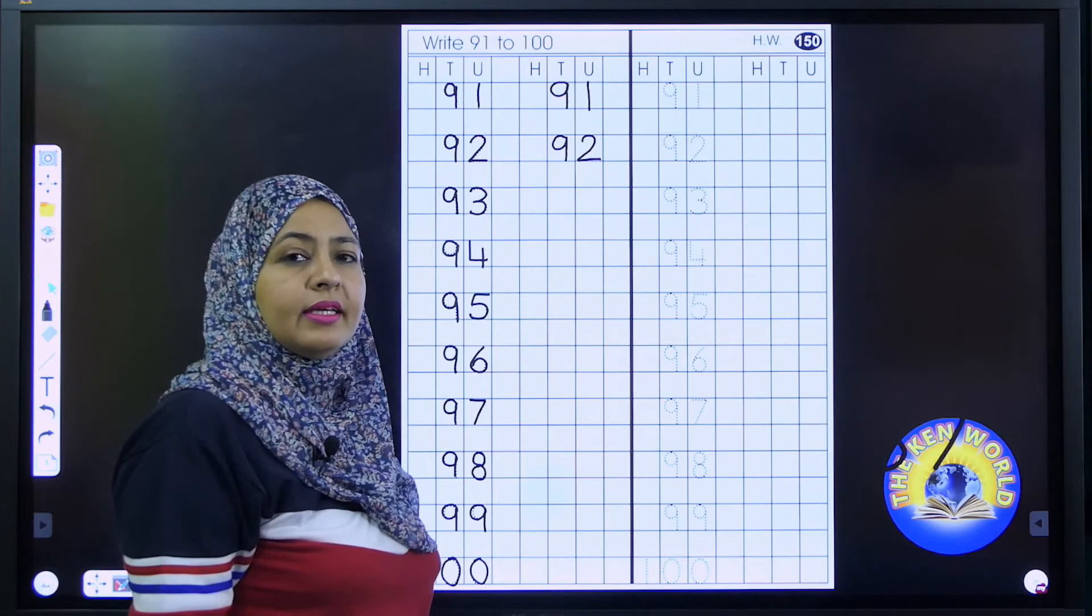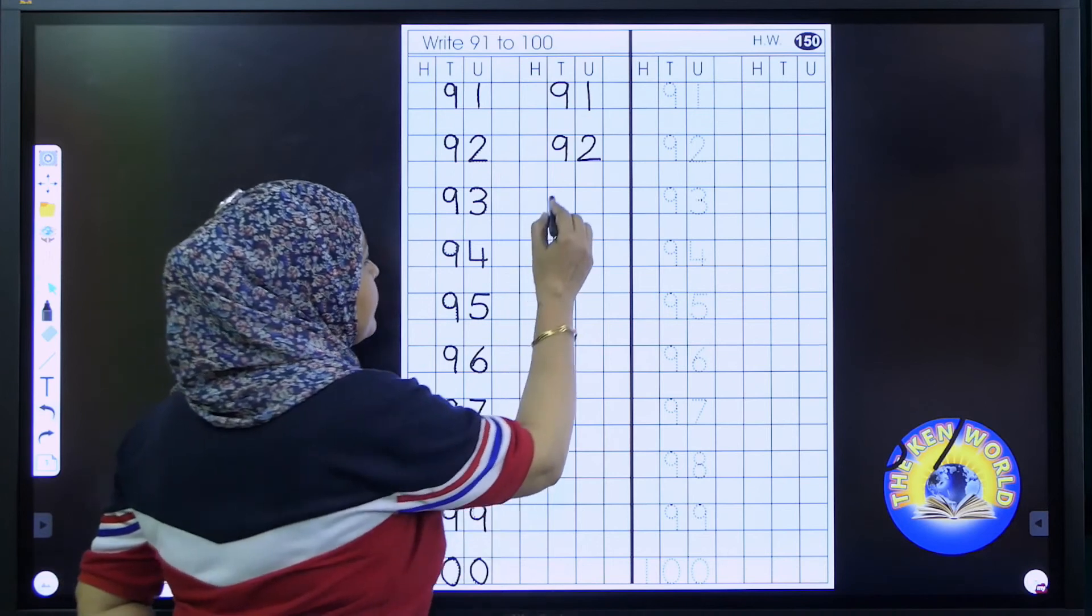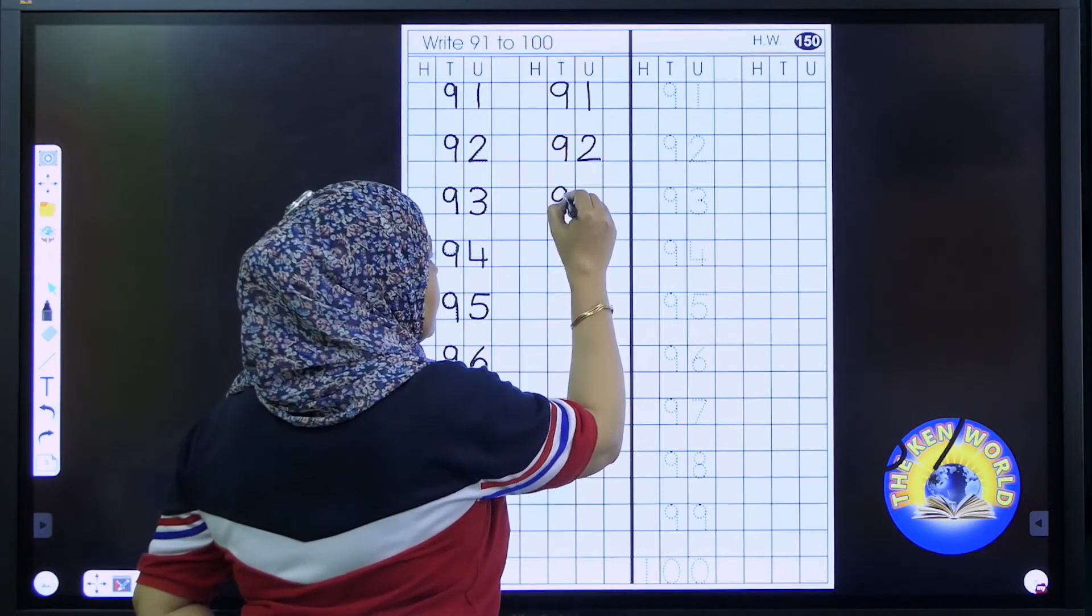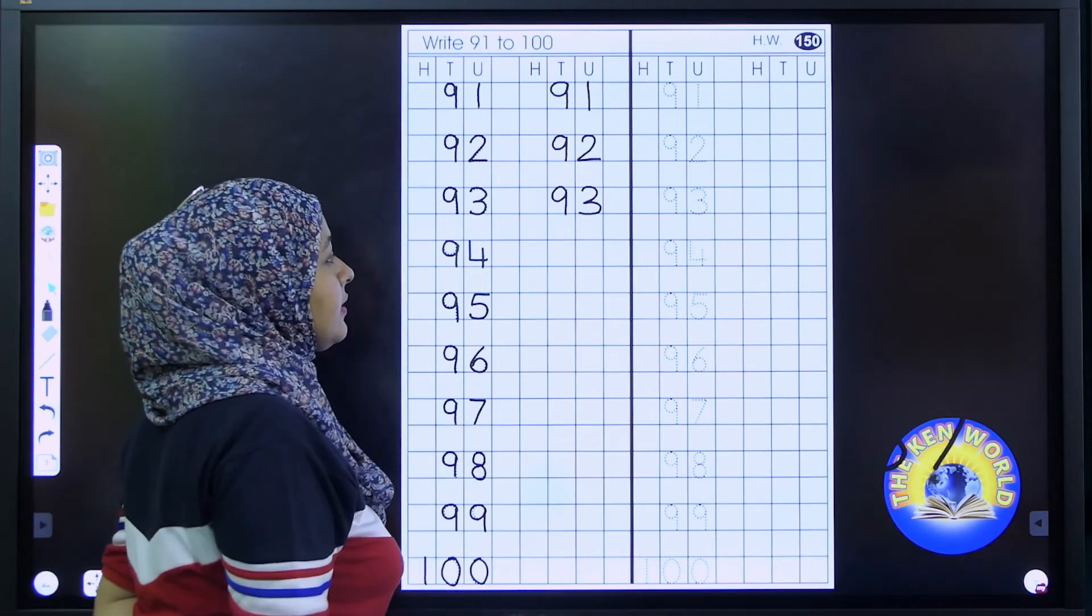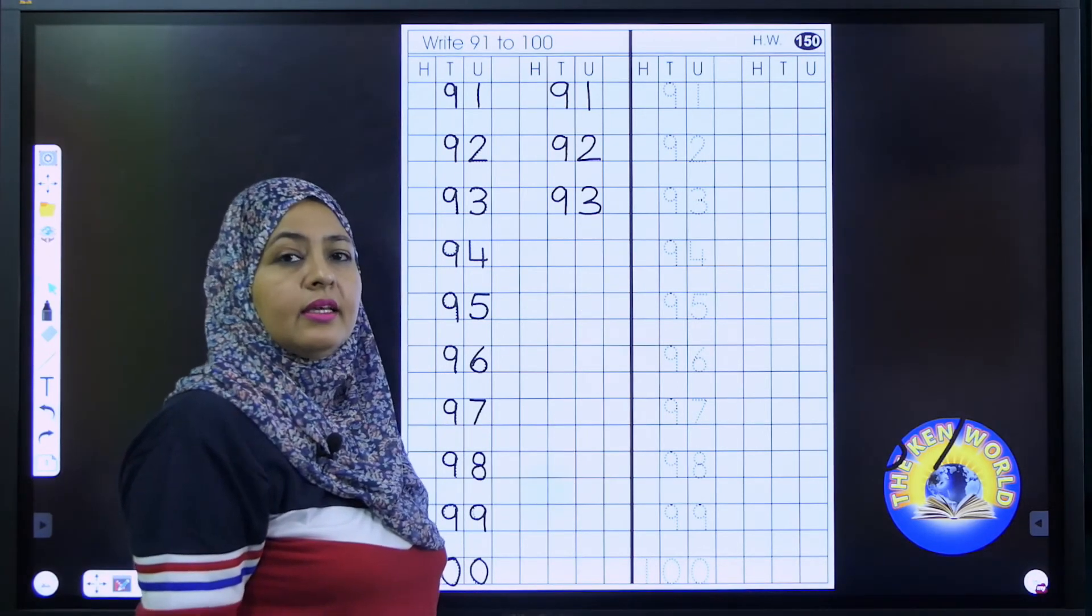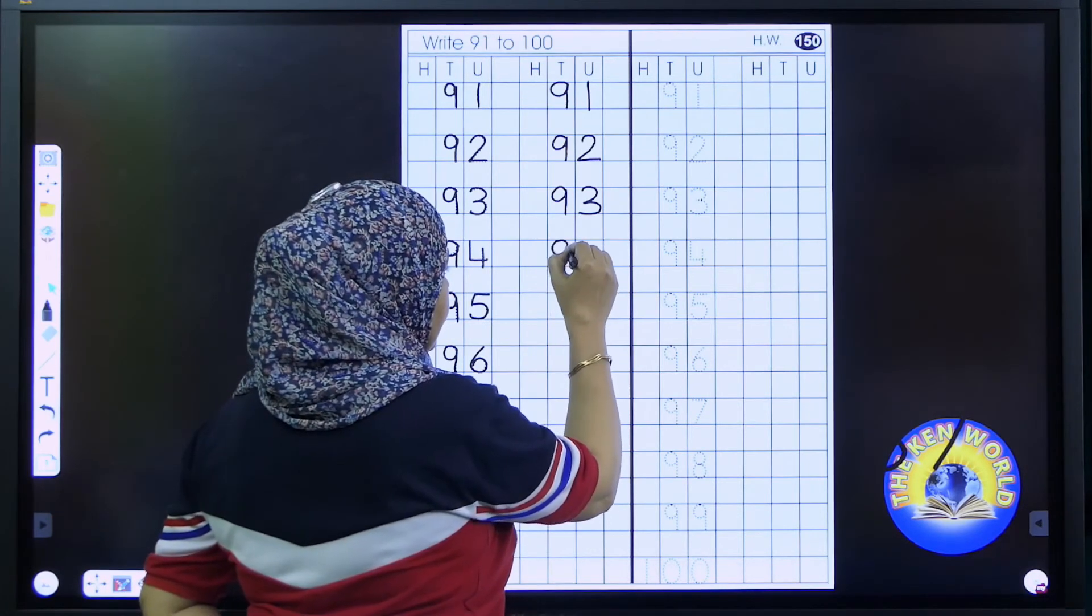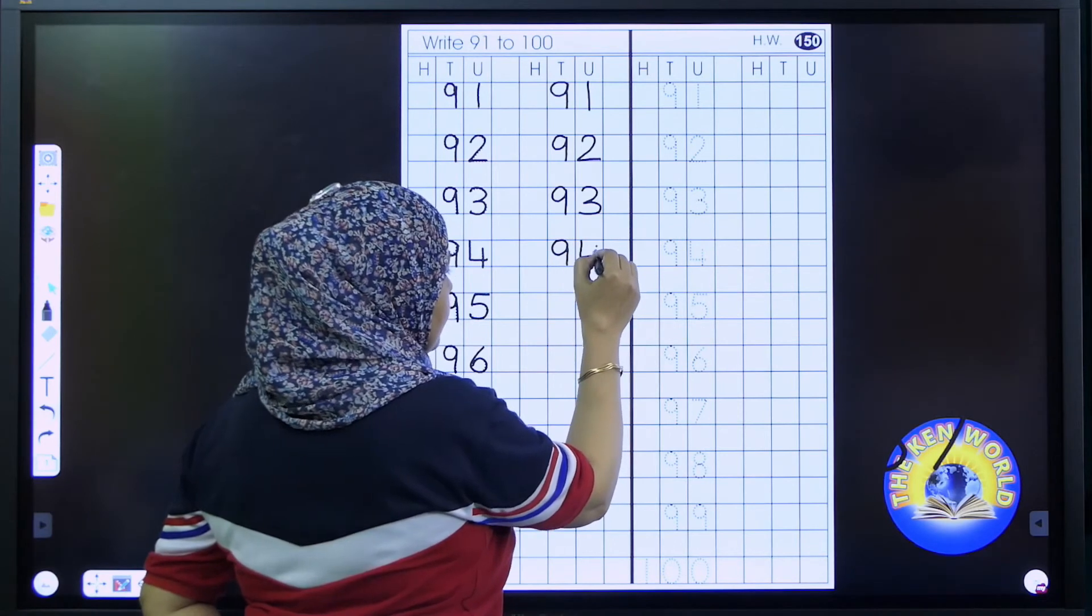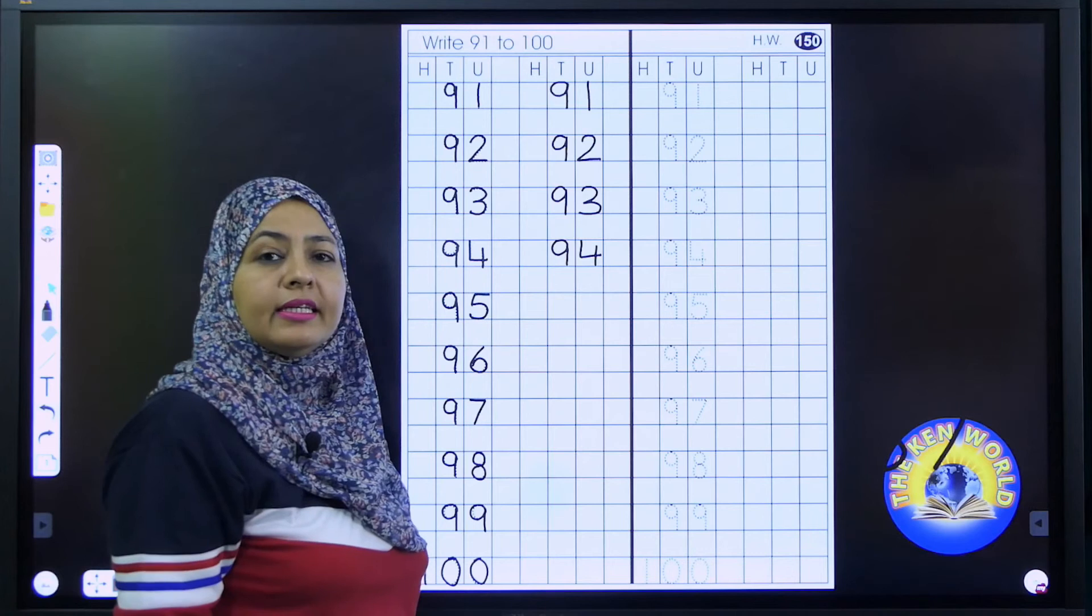The next number is, very nice. 93. 93. 93. What comes after 93? 94. 94. 94. After 94 it is, exactly 95.